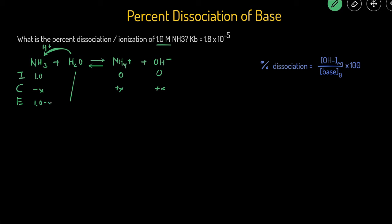So this is 1.0 minus x. And then this is x. And that's x. Then we just need to solve for x. And that's going to equal the equilibrium concentration of the OH minus.